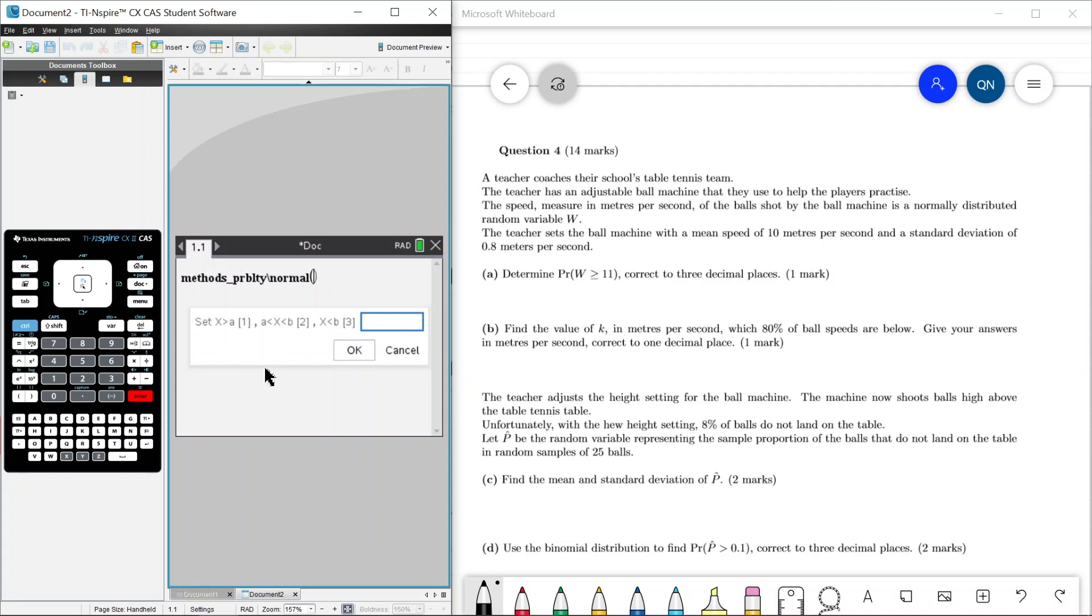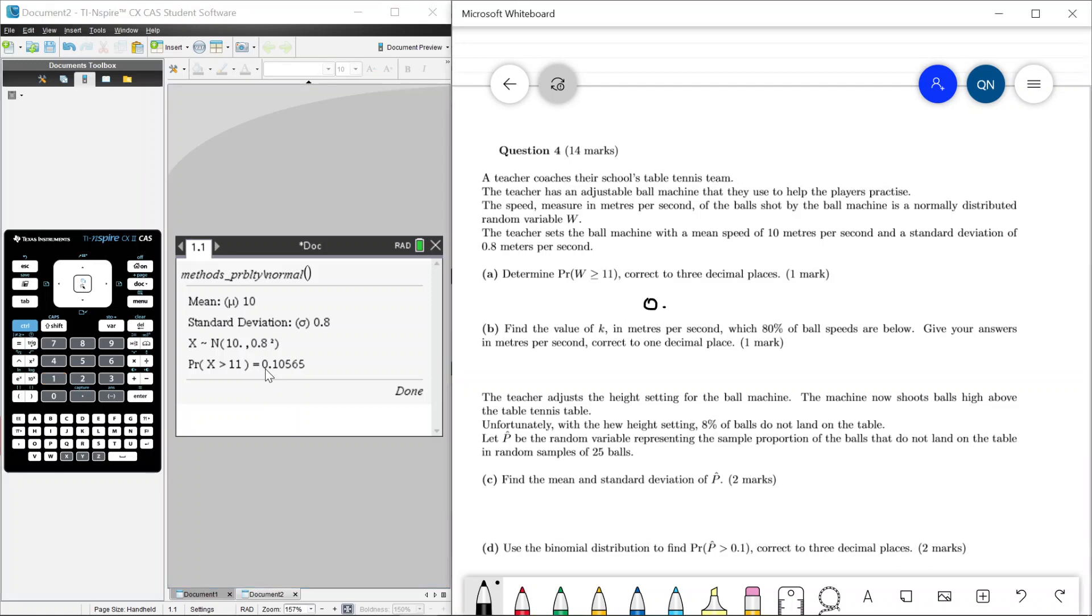Speed measured in meters per second of the balls, normally distributed by the variable w. We want to find the probability that w is greater than or equal to 11. This is finding probabilities on a normal distribution. Let's go to methods, probability, and then normal. We're going to go 1 because it is bounded below. The mean is 10, standard deviation is 0.8, and the a value is 11. So it's 0.106 to three decimal places.